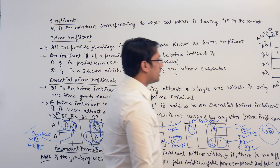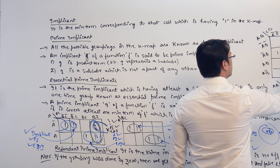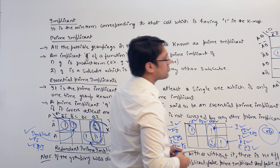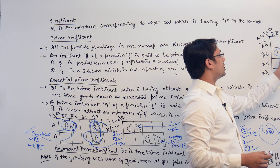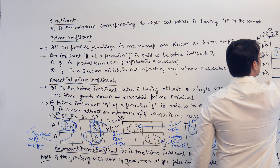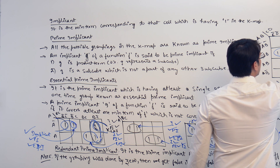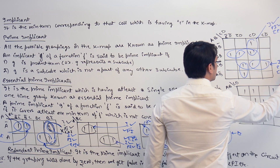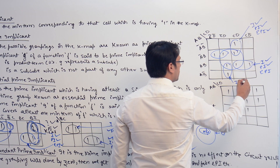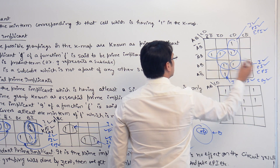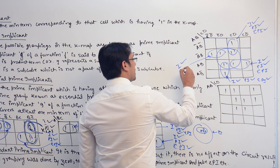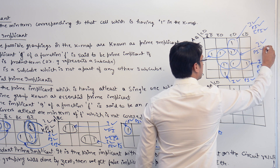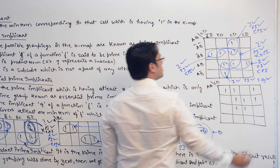Now if you check these K-maps, we can have subcubes of various sizes, and we can also make smaller subcubes inside a bigger subcube. The individual subcubes — the smaller ones — are each an implicant and a prime implicant as well as an essential prime implicant. But this bigger subcube is an implicant and also a prime implicant, but it is not an essential prime implicant.